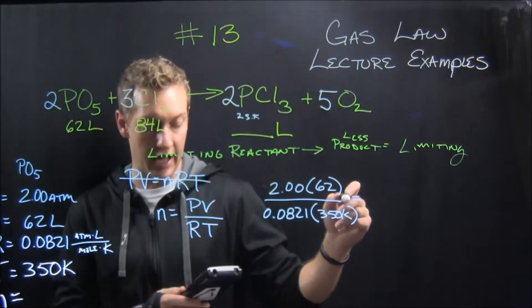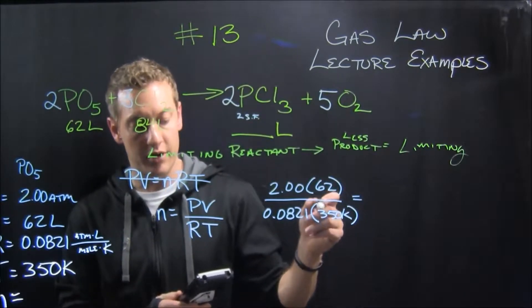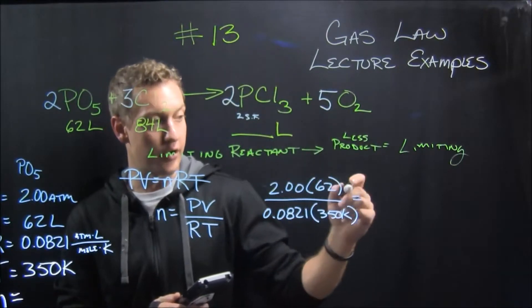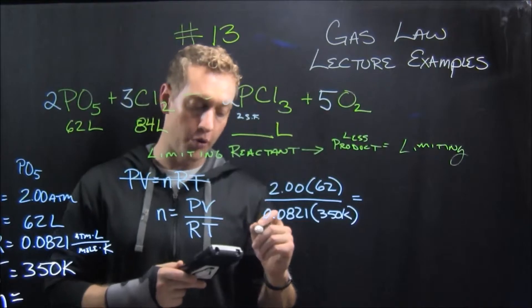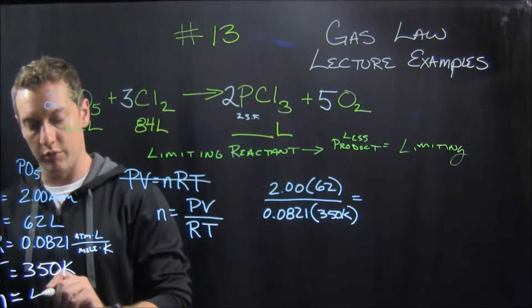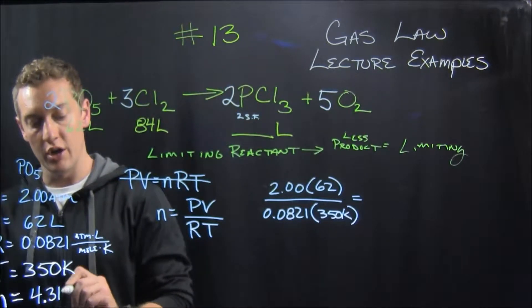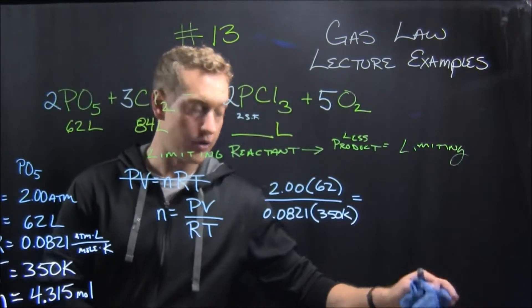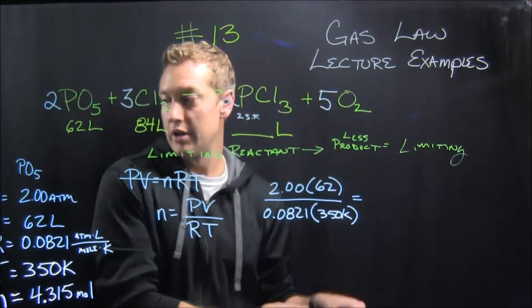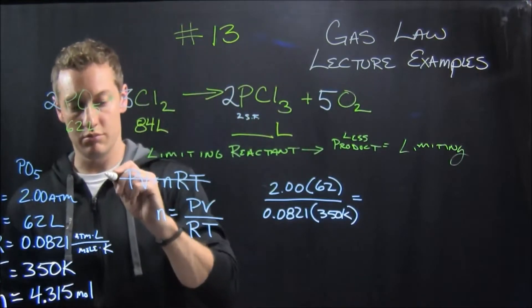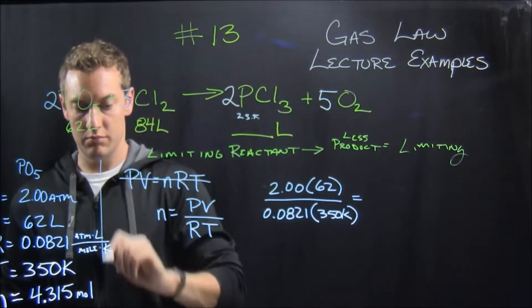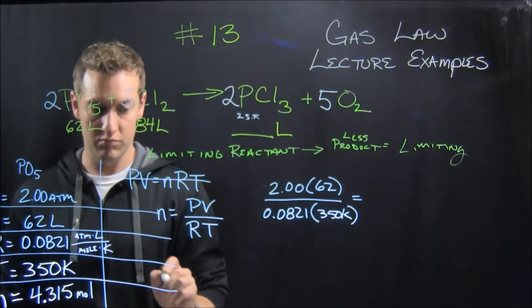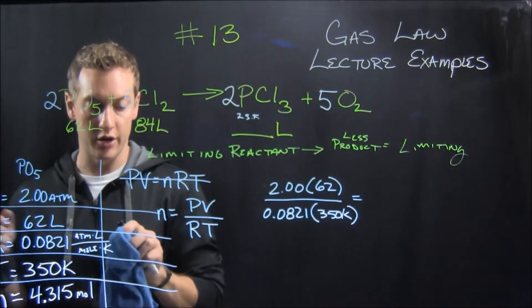All right. And that ends up at four point. We're going to keep more than two sig figs for right now. We'll round at the very end. So it equaled 4.315. So we'll put down 4.315 moles. And then I'm actually going to kind of make a little chart here. All right. So we'll just keep that going.